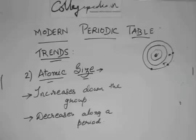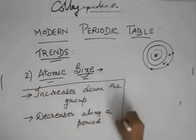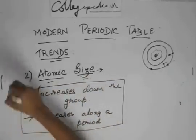Atomic size will increase down the group and decrease along a period.